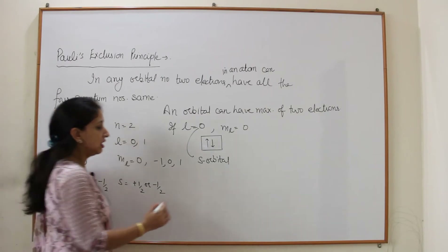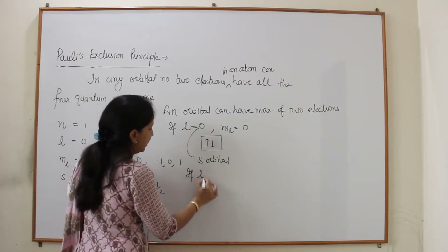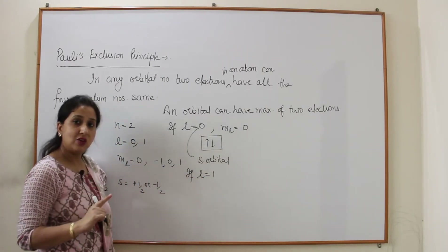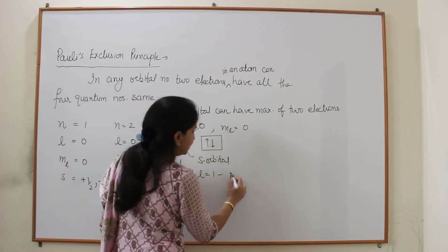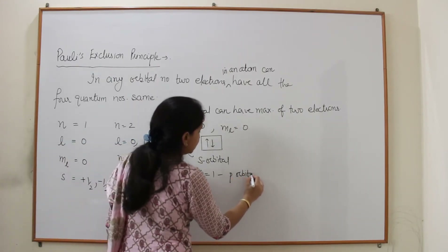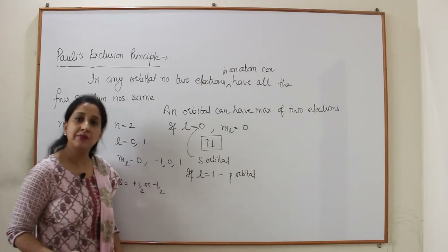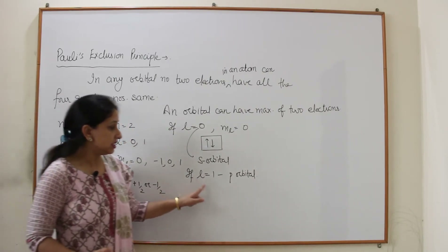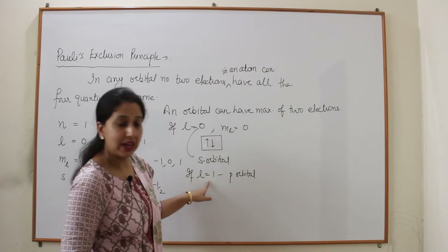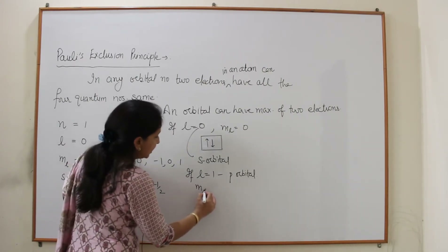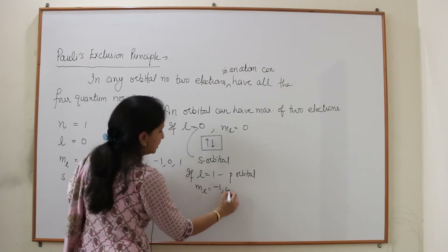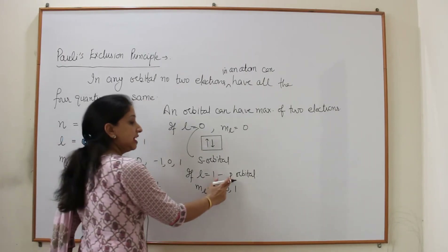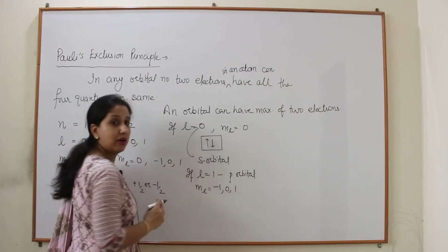Similarly, when L=1 there is a P orbital. With L=1, the ML values possible are −1, 0, and +1. This means the P sub-shell has three orbitals — Px, Py, and Pz.